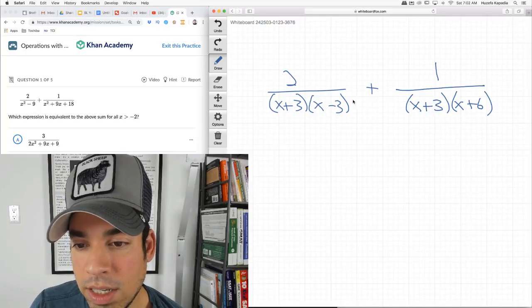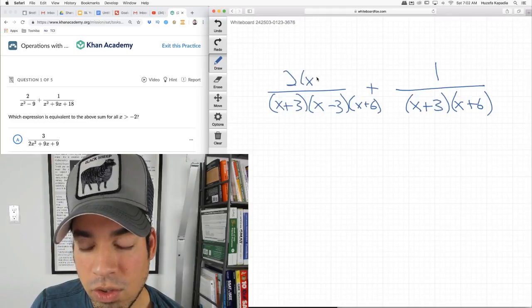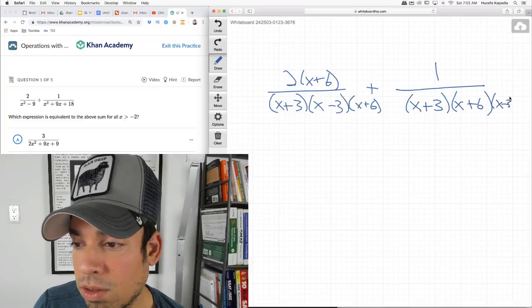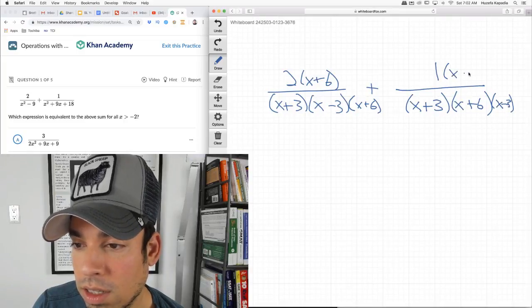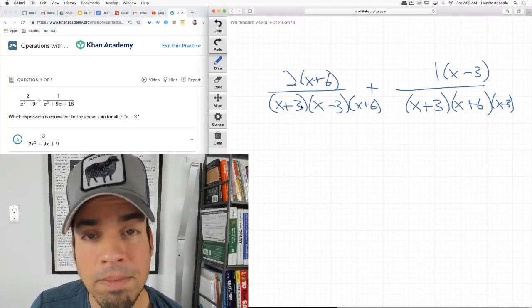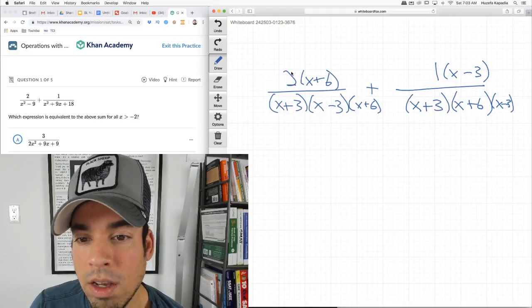This one is a difference of squares. So I can factor it like x plus 3 times x minus 3. This one is not a difference of squares, but it's a nice regular quadratic that can be factored. So what two numbers multiply to 18 and add to 9 is 6 and 3. Now, to get common denominators, they both have x plus 3 in common.